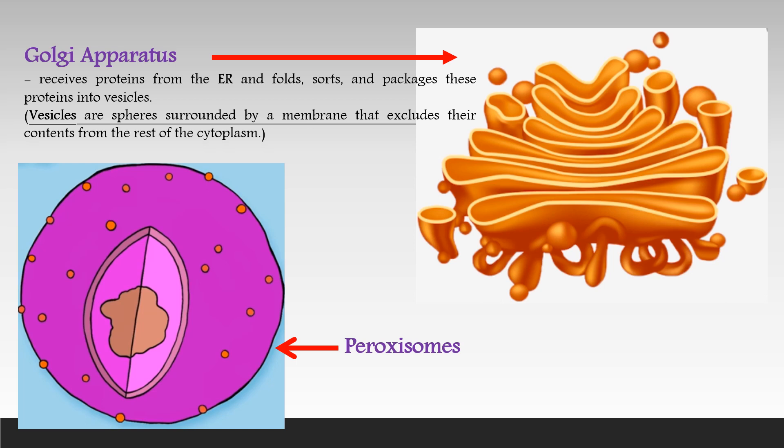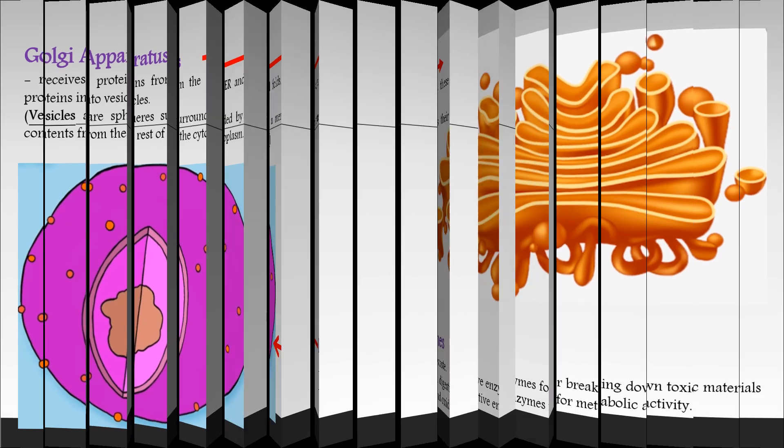Peroxisomes metabolize waste. They contain digestive enzymes for breaking down toxic materials in the cell and oxidative enzymes for metabolic activity. Now that we are done with the similarities, let us know the differences between plant and animal cells.